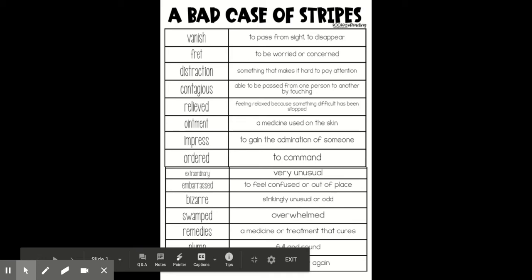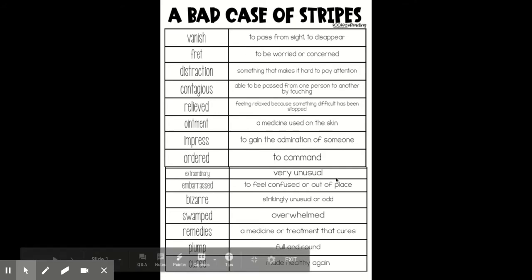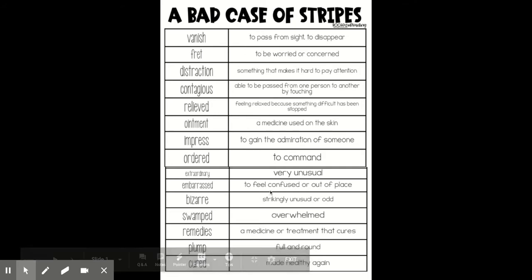I want to refer you back to the list of vocabulary words you received in your packet on Monday. You would use those again and again — it has your title, the book, and all the vocabulary words that are used in the book. Today we're looking at the words contagious, relieved, and ointment.